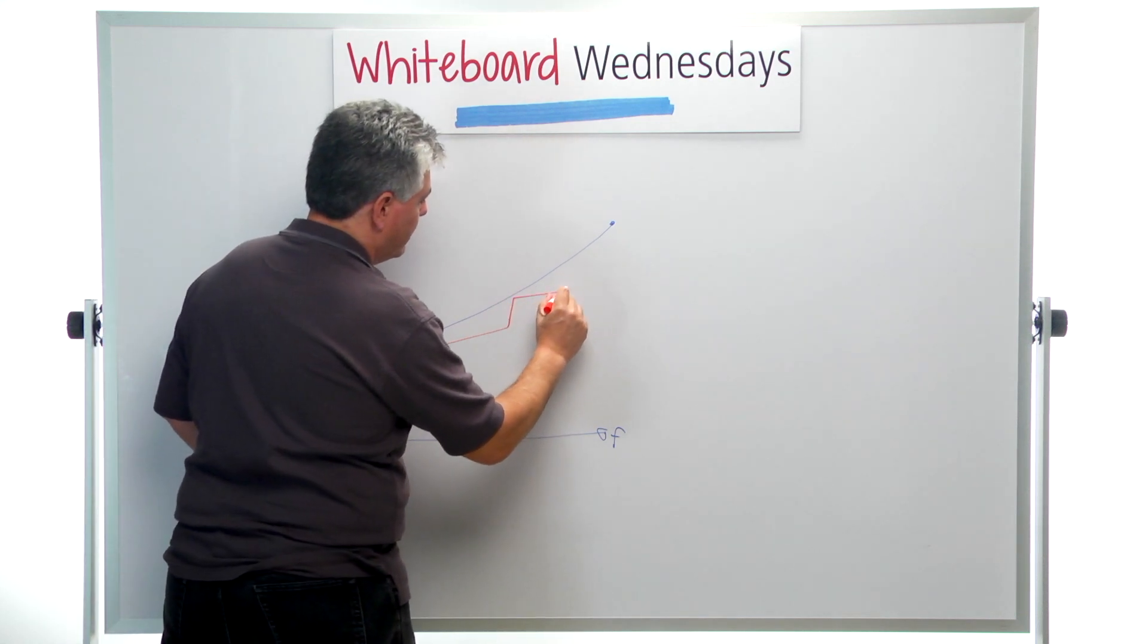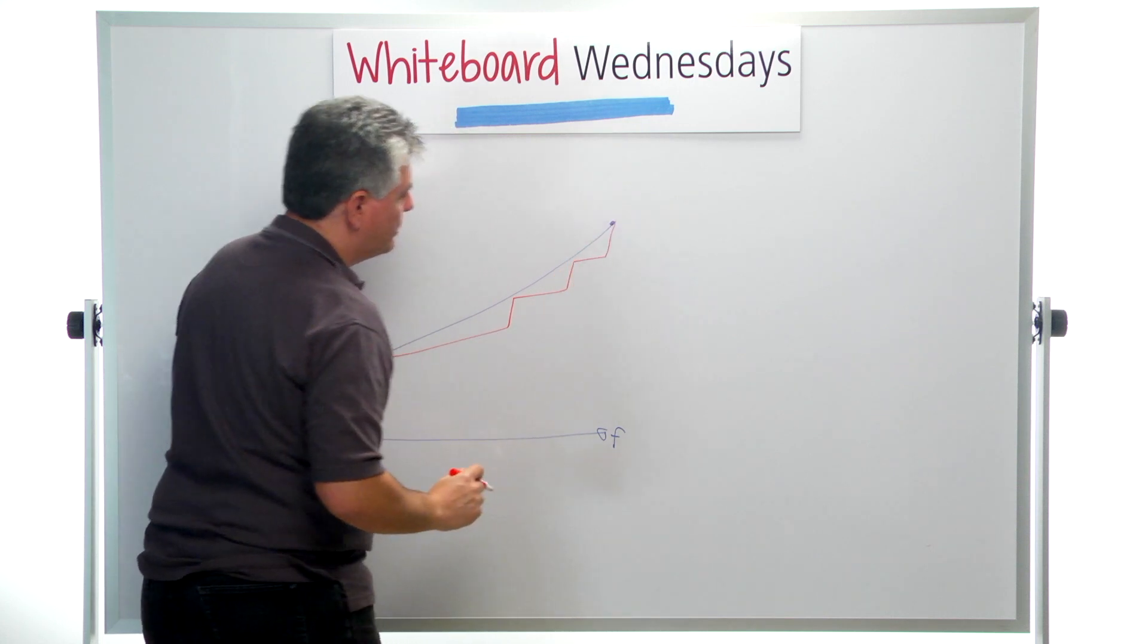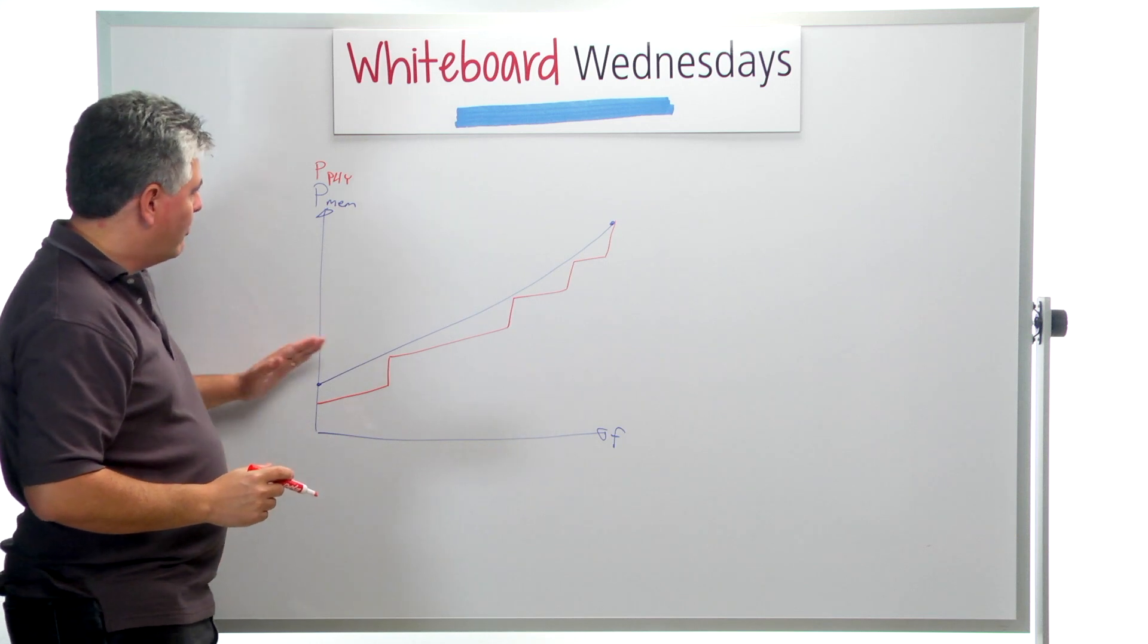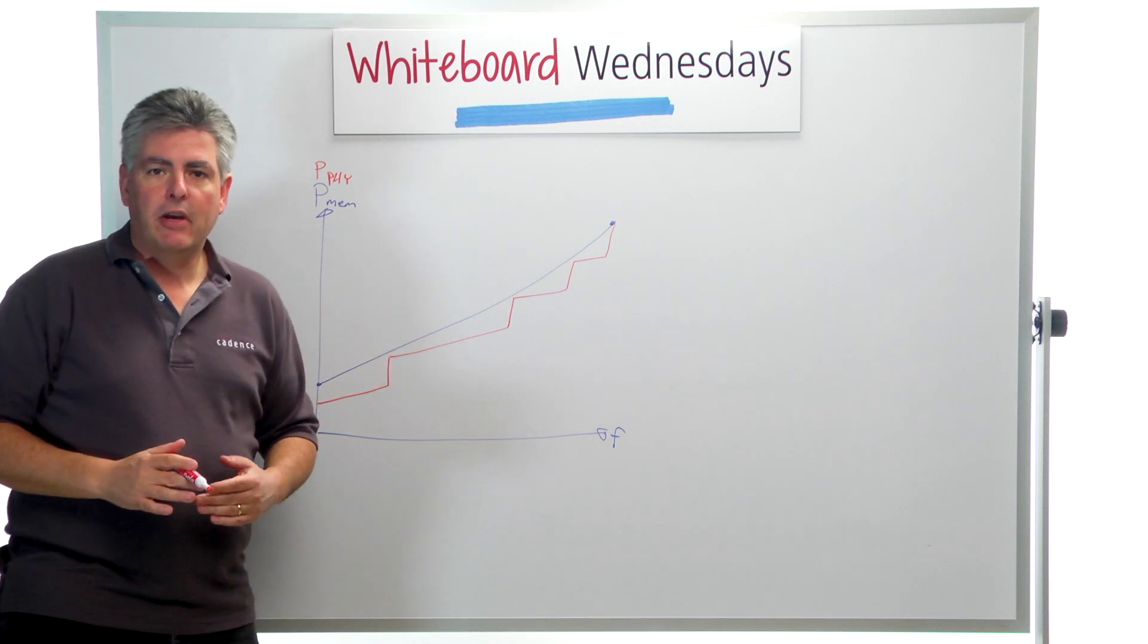And a linear, and a step function like this. And so we may arrive at the PHY power in a different way from how we arrive at the memory power.